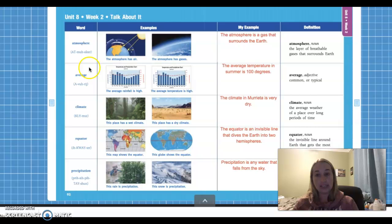Our second vocab word is average. Average just means common or typical. So the example that we talked about was the average temperature in summer in Murrieta is 100 degrees. So typically, on average, it's very hot here in Murrieta.